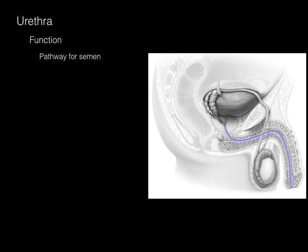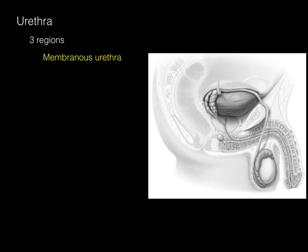At the top of the prostate gland and bottom of the bladder, there is a sphincter that contracts to ensure semen is not mixed with urine during ejaculation. There are three regions of the urethra: first, the prostatic urethra, which is surrounded by the prostate gland; second, the membranous urethra, found in the urogenital diaphragm; and finally, the spongy urethra, found in the spongy erectile tissue of the penis, also known as the penile urethra.